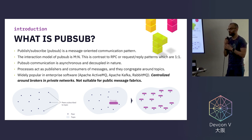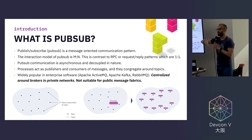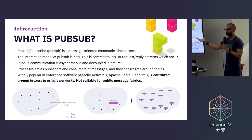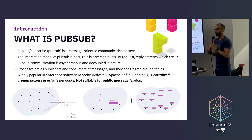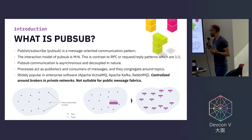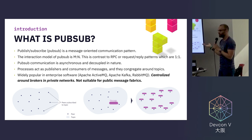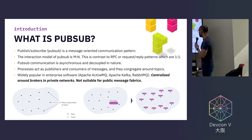PubSub communication is asynchronous and decoupled in nature. Whenever I send a message as a producer, I have no guarantee of who is actually going to receive that message, because peers don't have a complete view of the network or the subscription state. There's also no time dependency — I receive no explicit confirmation from any peer that they've received my message. Processes act as publishers and consumers, and in a peer-to-peer network a process can act as both, congregating around topics of interest. PubSub is widely popular in enterprise software — products like Apache ActiveMQ or Kafka — but in those contexts it's usually centralized around brokers in private networks, and those approaches are not suitable for public message practice.